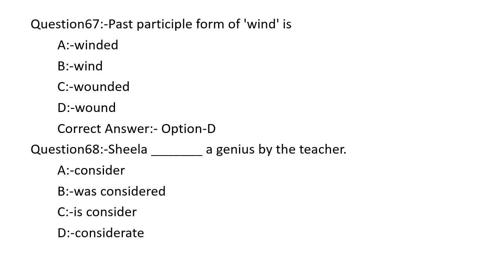Sheila dash a genius by the teacher. Option A: CONSIDER. Option B: WAS CONSIDERED. Option C: IS CONSIDERED. Option D: CONSIDERATE. Option B is the correct answer — WAS CONSIDERED. Sheila was considered a genius by the teacher.